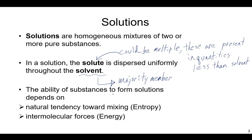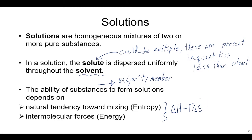This is really a balance that we talk about a lot in chemistry: the natural tendency towards mixing, which we call delta S — that's entropy — and the intermolecular forces, which we call delta H, enthalpy. As we progress this semester, we'll get to a formula involving delta G, which governs whether anything happens in nature. It's always a balance of entropy and enthalpy. Not critical to memorize these formulas now, but this is the first time in this course we're talking about this balance between energy and entropy.